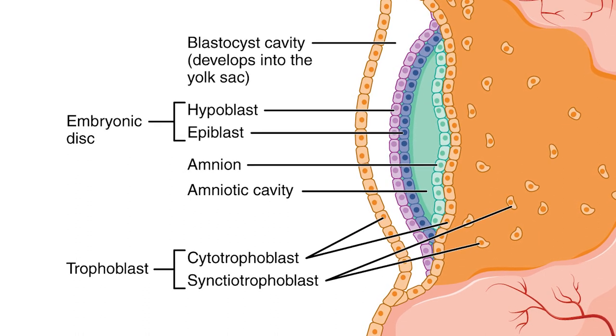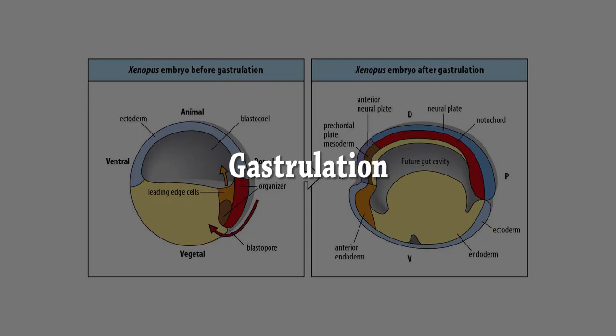The epiblast is adjacent to the trophoblast and made of columnar cells. The hypoblast is closest to the blastocyst cavity and made of cuboidal cells. The next stage is gastrulation.